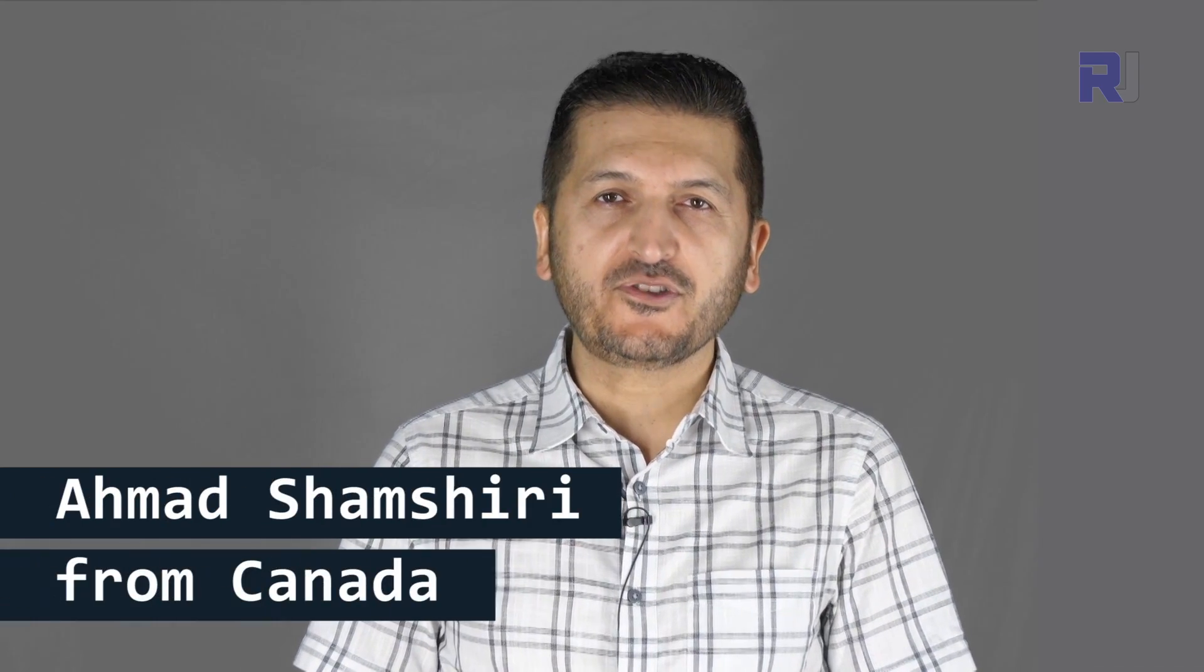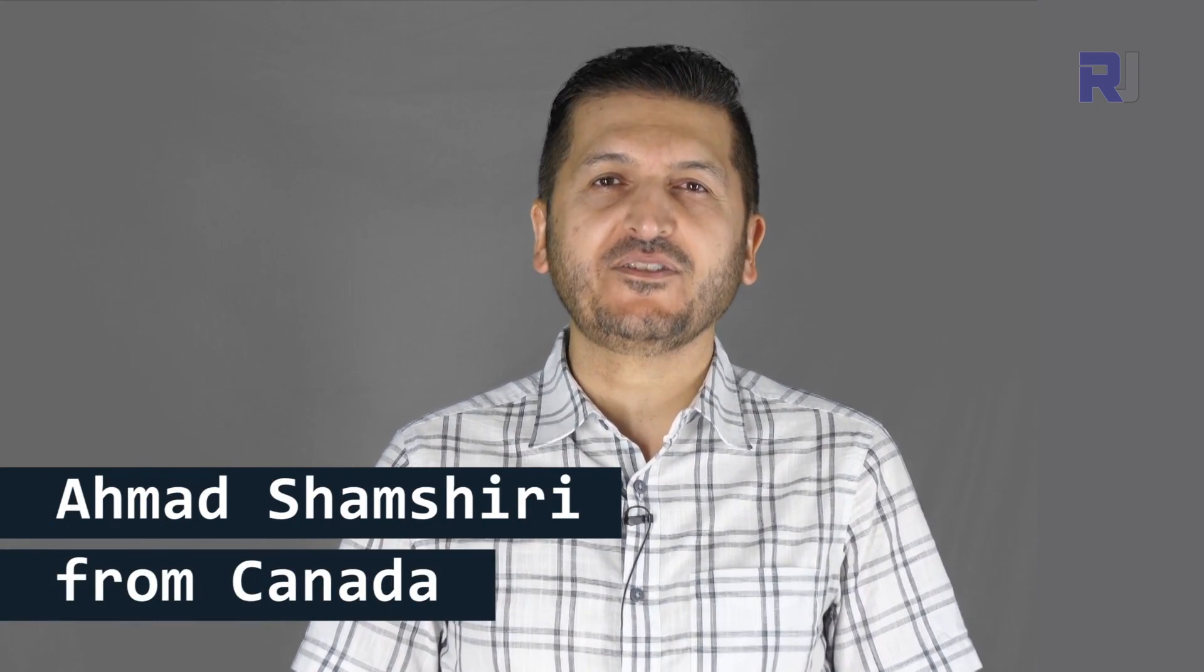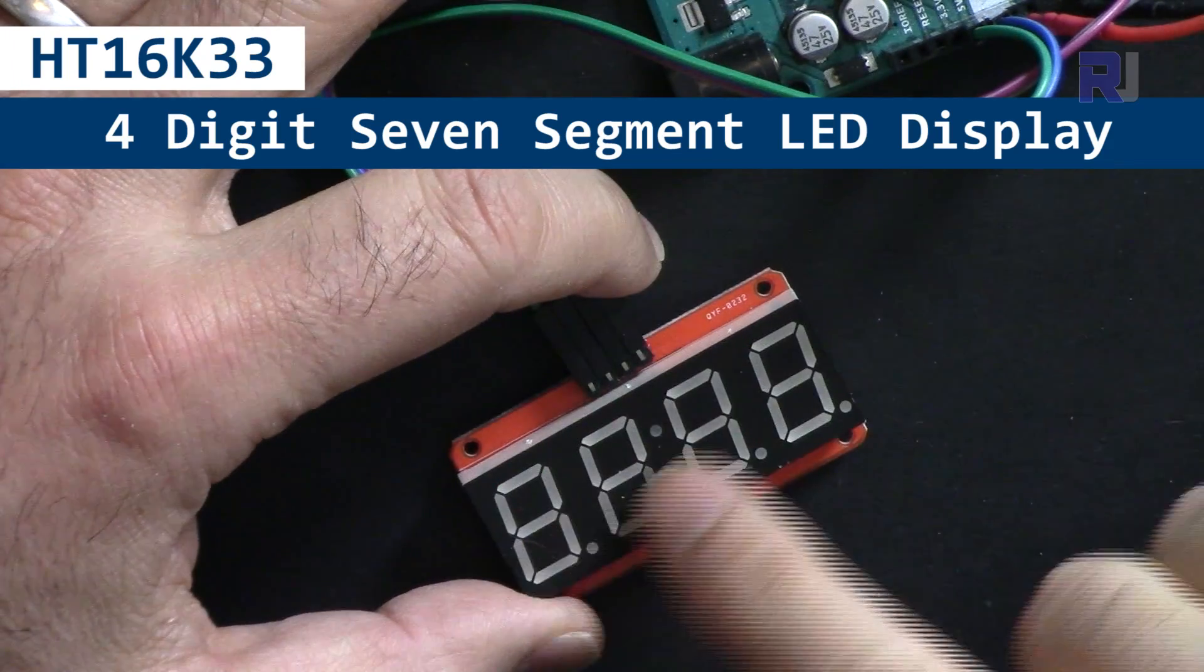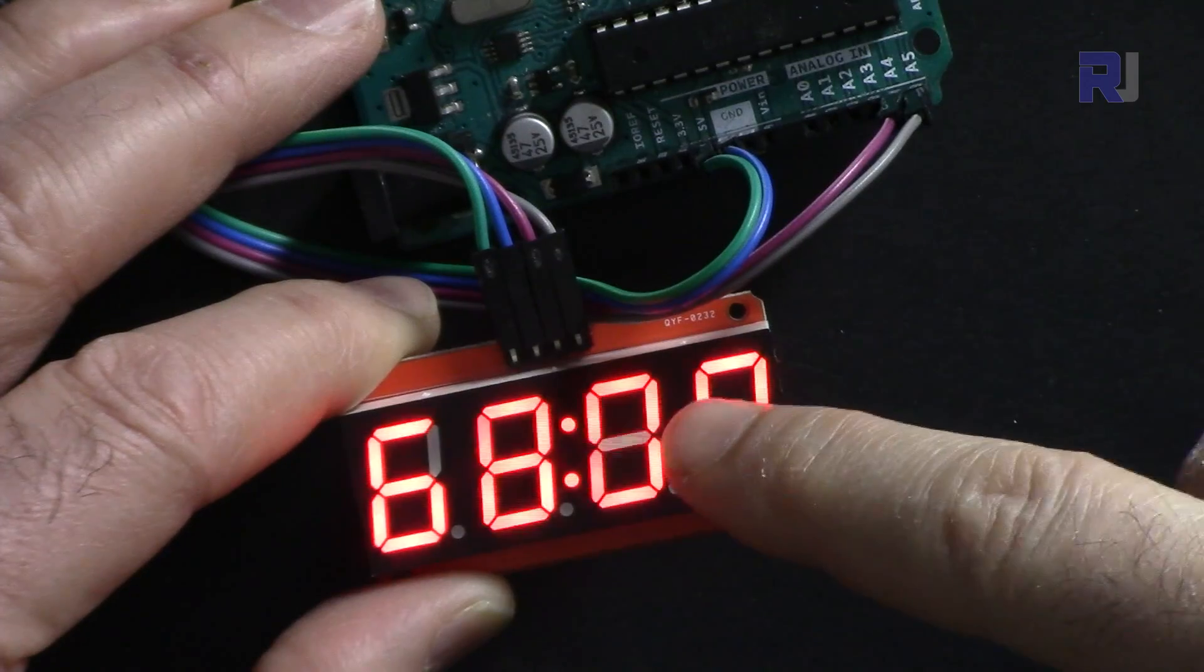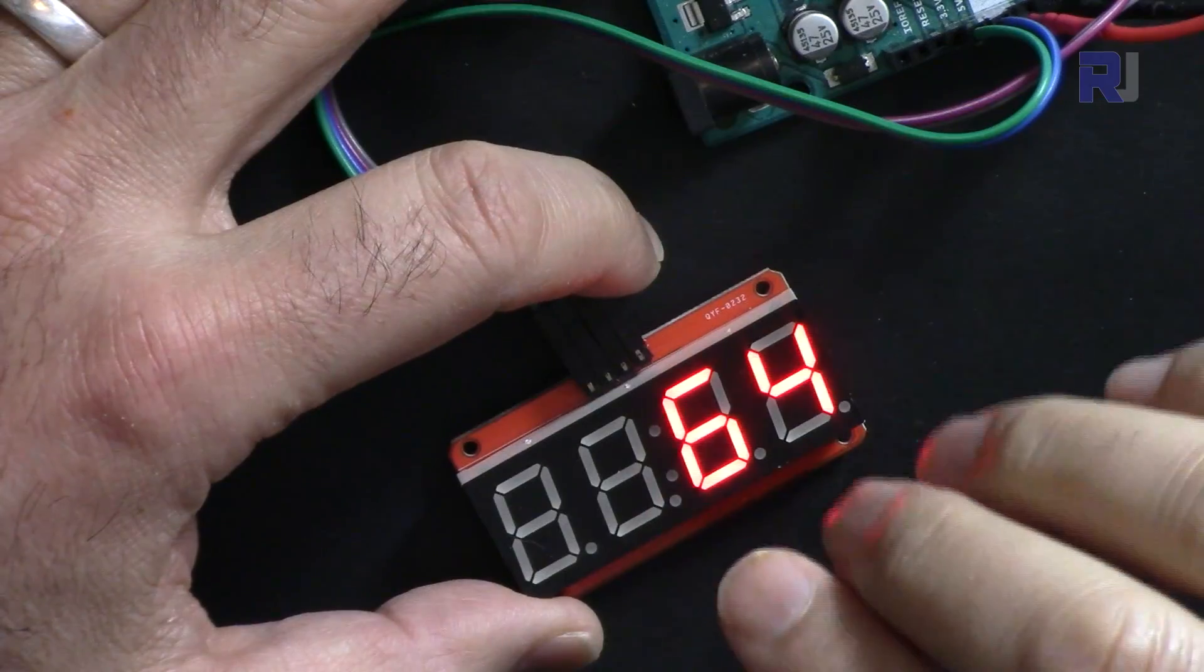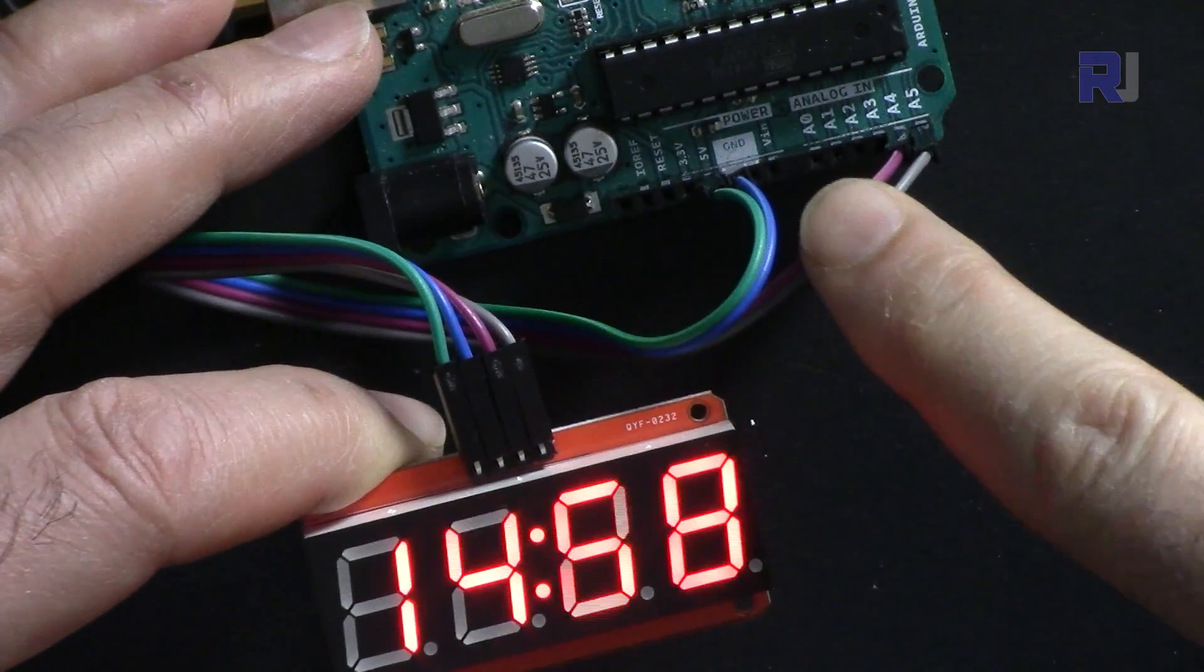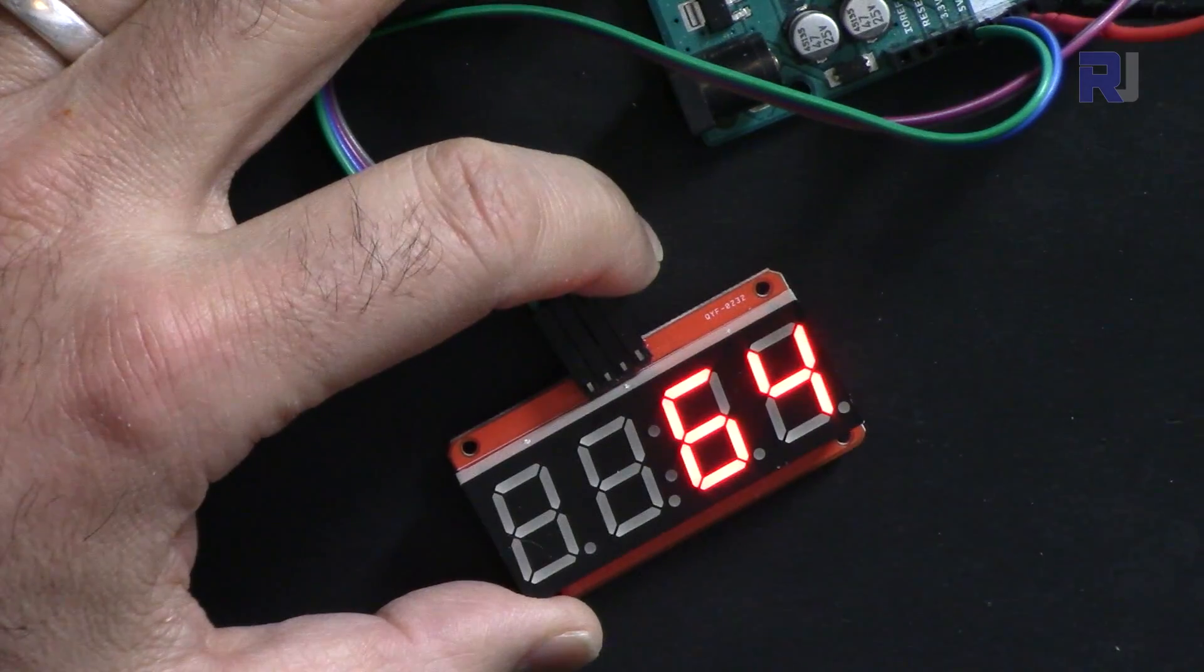Hi, welcome to an Arduino tutorial from Robojax, my name is Ahmad Shamshiri. In this video I'm going to introduce a four-digit seven-segment display based on the HT16K33 chip that can do everything you expect using only four wires with I2C communication. You can easily display integers with preceding zeros, negative integers, or floats.